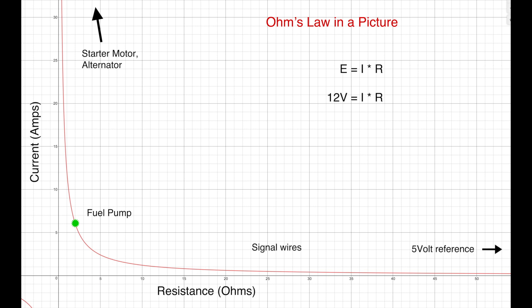Now look at the horizontal part of the curve. This is where most automotive circuits live. These are low current narrow gauge signal wires. They live on the signal side of relays and sensors.